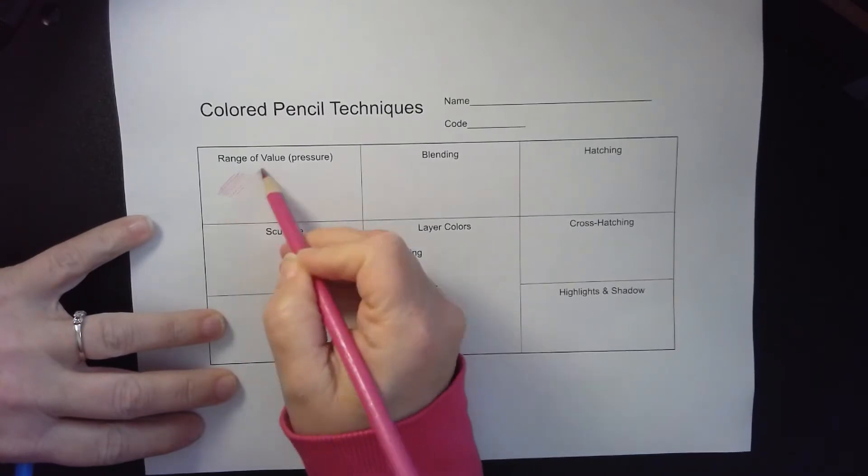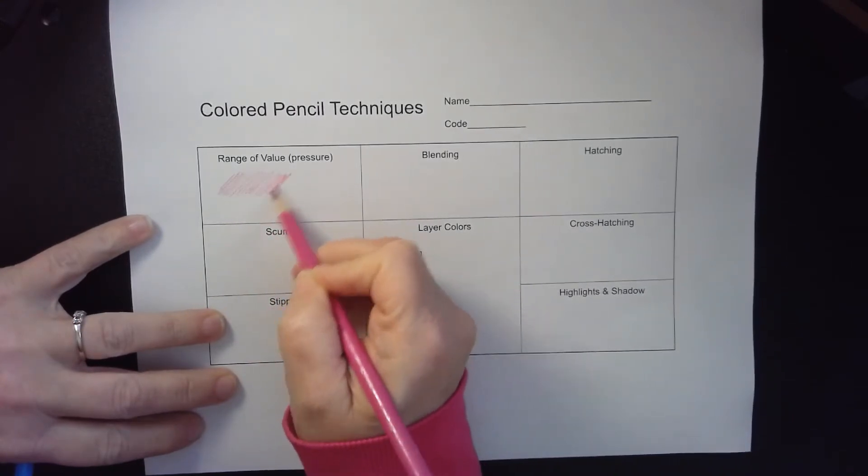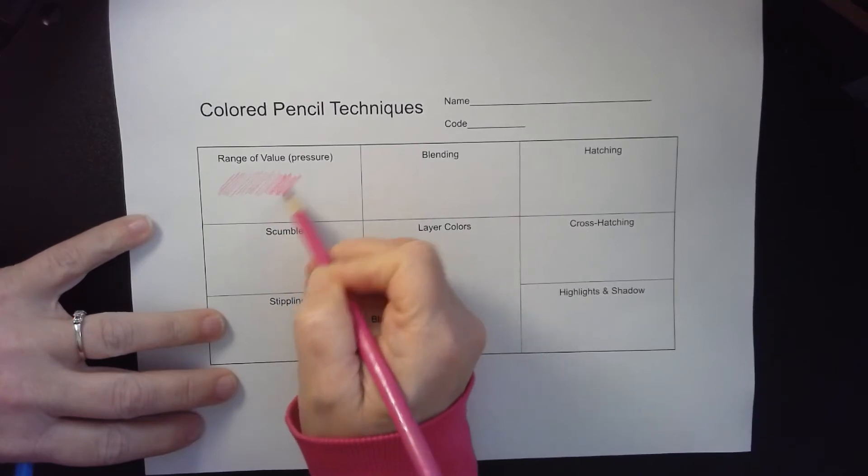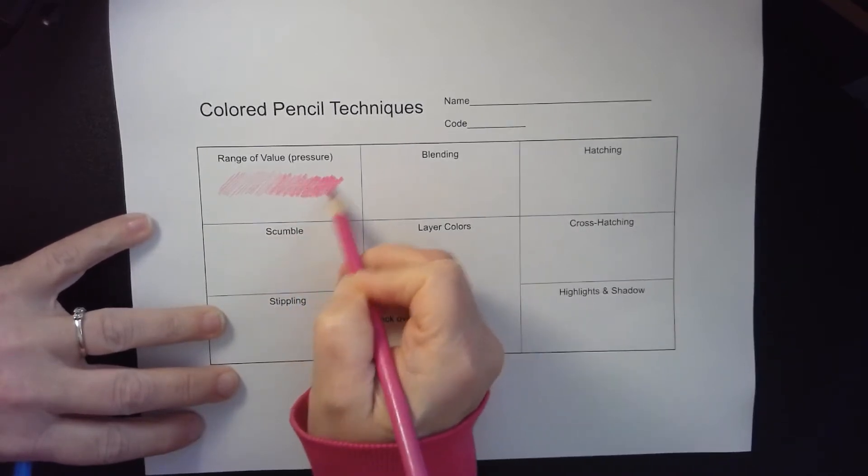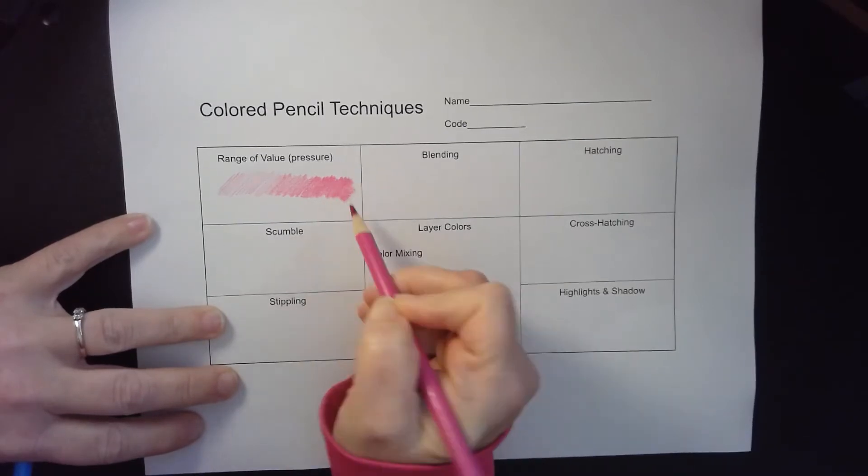When you start out, you're going to go really lightly, get a little harder on your pencil, pressing harder, harder, harder, and your color as you can see is going to become more and more intense as you go along.